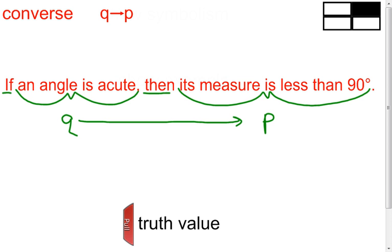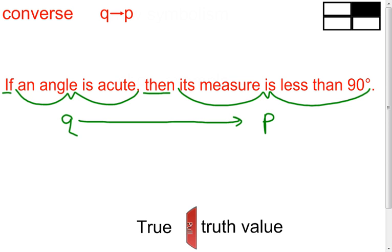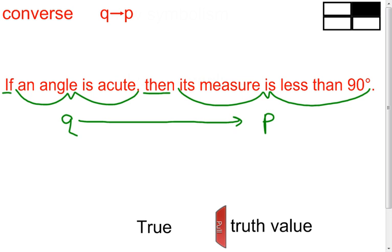The truth value of the converse: this one says 'if an angle is acute, then its measure is less than 90 degrees.' This is true, because no matter what acute angle you pick, its measure will be less than 90 degrees. Notice the difference — the original conditional statement was false, but the converse is true. So depending on the order of the statement, the truth value can change.